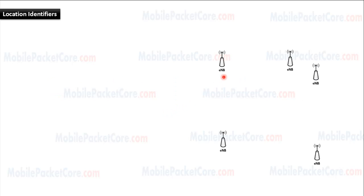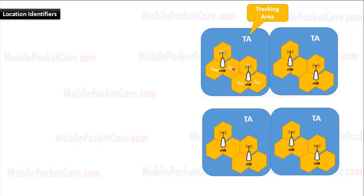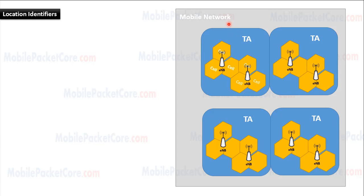In an LTE network, every eNodeB is divided into several cells. Every group of cells is grouped into an area called a tracking area, or TA. Therefore, we can say that the mobile network is divided into several tracking areas, and every tracking area contains several cells.